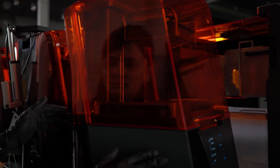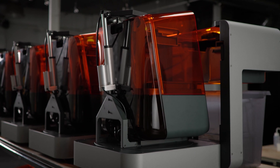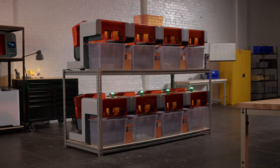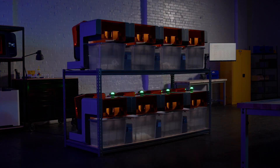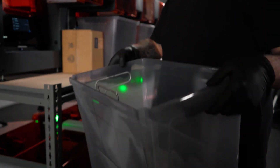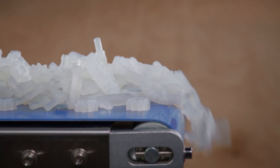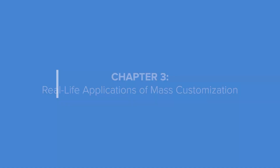Integrating 3D printing into manufacturing workflows with automation solutions, such as Formlabs Automation Ecosystem, can help companies scale production and reduce cost per part further to make mass customization a viable business model for a wider range of applications. Let's see some examples of how businesses around the globe have been using Formlabs 3D printers for mass customization.